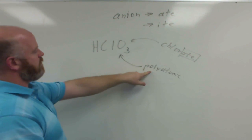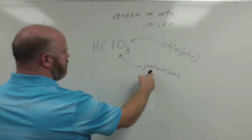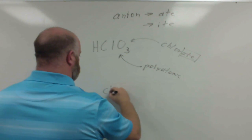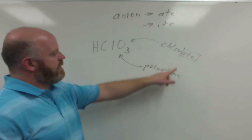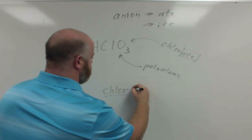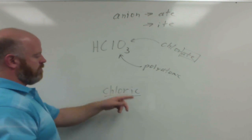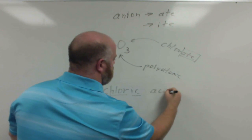So we have chlorate. Because it's a polyatomic, we don't use hydro. So we just use the root, chlor, and any time you have an -ate ending, you keep -ic with it. So chloric acid.